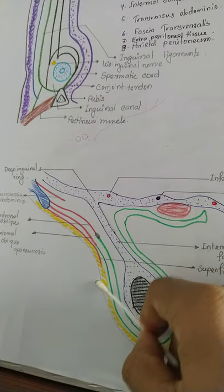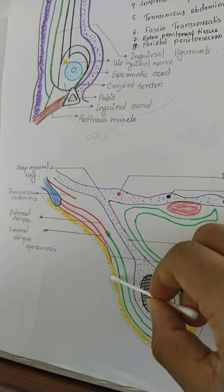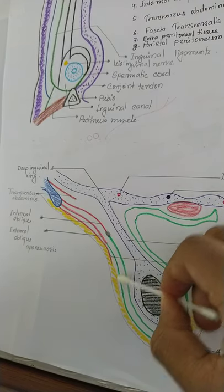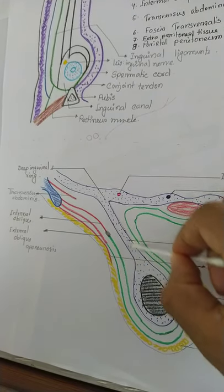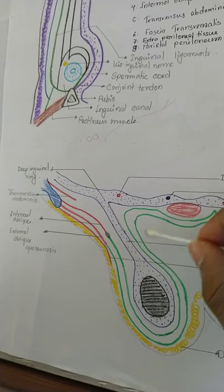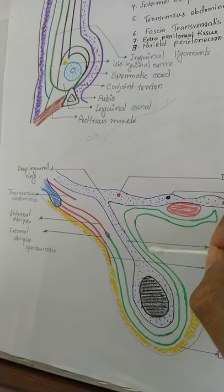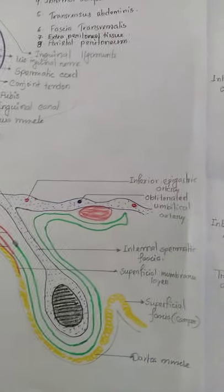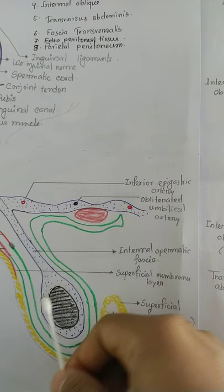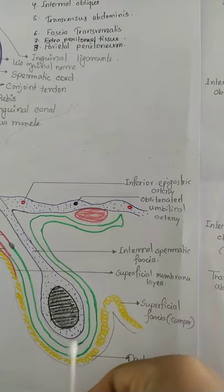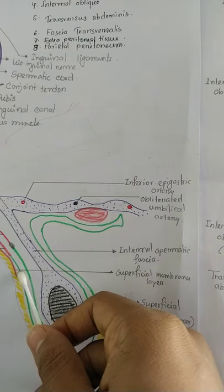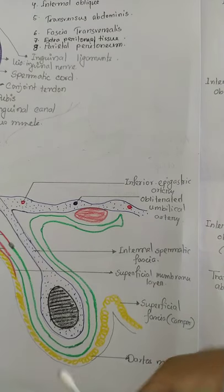The layers of the scrotum from before backwards are: skin, dartos muscle, external spermatic fascia, cremasteric muscle, internal spermatic fascia, and then the layers of the testis including the tunica vaginalis. The internal spermatic fascia corresponds to the superficial membranous layer, and the dartos muscle corresponds to Camper's layer.